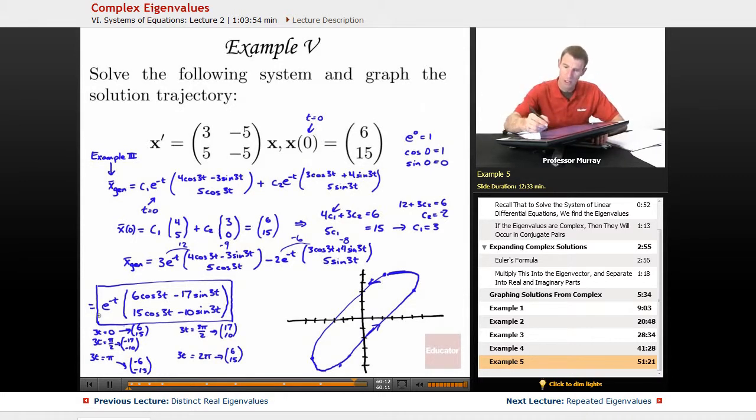So let me draw the true graph in red. It does start, there's t equals zero there, but it gets smaller and smaller each time it travels around the origin. So that red graph is the true solution trajectory to this system.